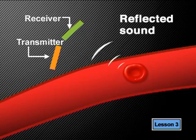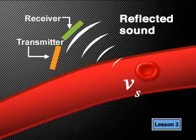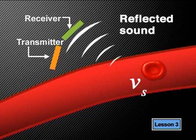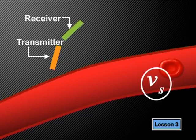However, the blood cells are moving, so they act as a moving source for the reflected ultrasound waves. The reflected waves are picked up by a receiver, and the difference between the transmitted sound and the reflected sound is analyzed to provide information about the velocity of the blood cells.